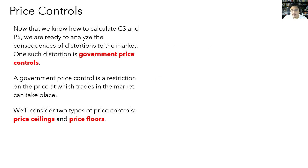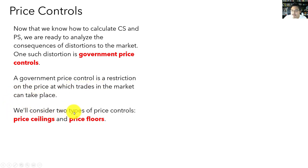Now that we know how to calculate consumer, producer, and total surplus, we can apply what we learned to analyze the welfare consequences of market distortions. This is our first example of applied policy analysis. The distortion we're focusing on today is government price controls — any restriction on the price at which trades in the markets can take place. We're going to consider two types: price ceilings and price floors.